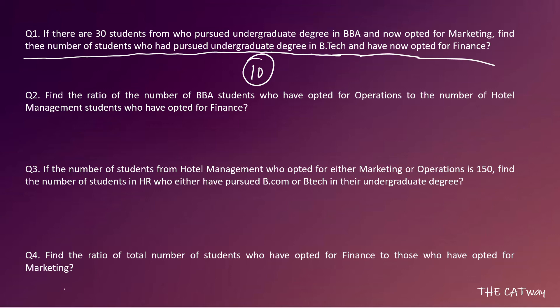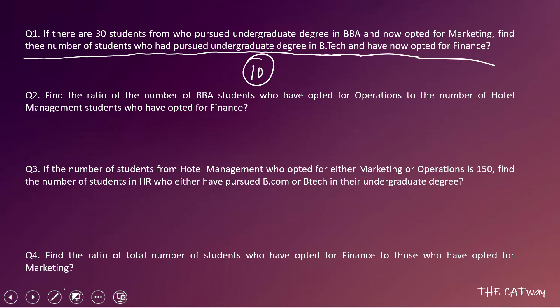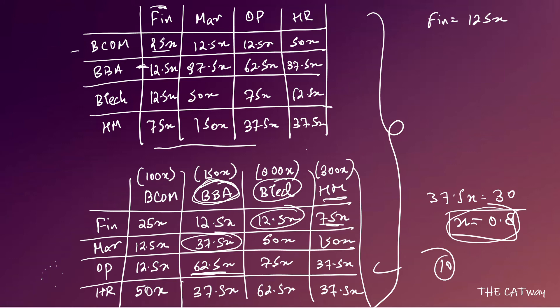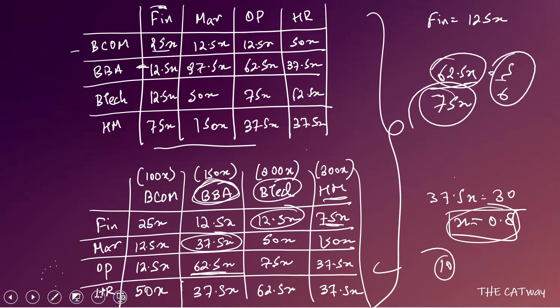Question 2: Find the ratio of BBA students who opted for Operations to Hotel Management students who opted for Finance. BBA → Operations = 62.5x; HM → Finance = 75x. Ratio = 62.5x / 75x = 5:6. The answer for Question 2 is 5:6.